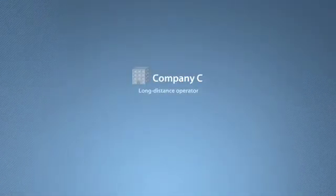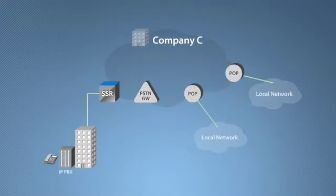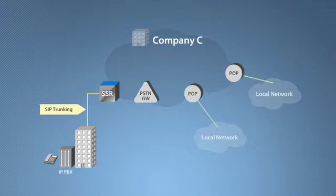Company C, a long-distance operator, has entered the local services market. They deployed Teclec's SIP signaling router solution to build a SIP trunking infrastructure to provide local services. Company C is an operator in the call routing sequence immediately prior to the terminating operator, so it's customary for Company C to perform number portability, or NP service, for voice-over-IP calls from their SIP trunking service.